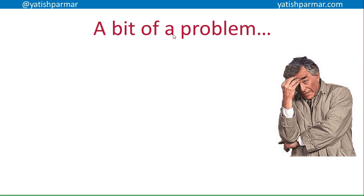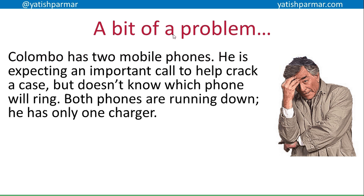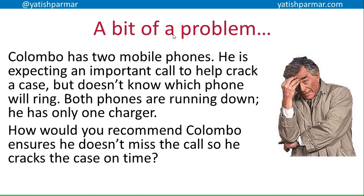You might recognise this guy — Columbo, the famous TV detective. Columbo's got a problem: he has two mobile phones and he's expecting an important call to help him crack a case, but he doesn't know which one will ring. Both phones are running down and he's only got one charger. How do you help him? He needs to not miss the call but can only charge one phone at a time. The smart answer: charge the first one for 10 minutes, then the other for 10 minutes, keep alternating — that way he keeps both running. This is similar to what happens on a computer.